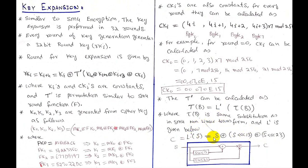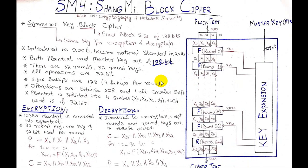The L' linear transformation XORs these three variants of S together to produce C. This C output from T' is then XORed with k0 to form k4 in the case of round 0. The round keys generated by key expansion are used for the encryption process, and also for decryption but in reverse order.